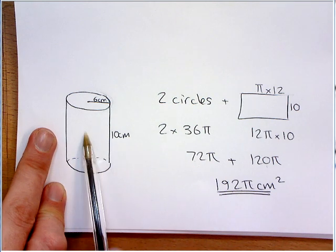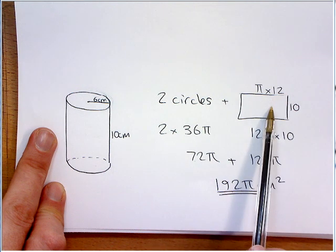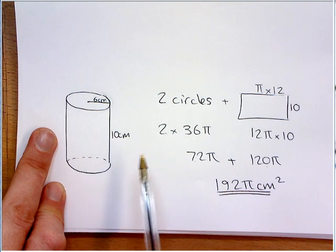So, this is quite tricky, but you just think about unraveling it. It is a rectangle rolled up. And that's a good grade B question there, guys.